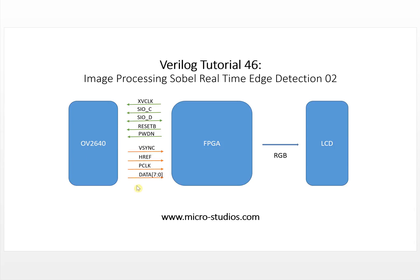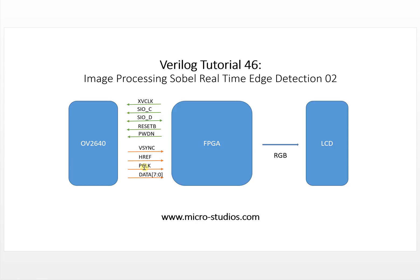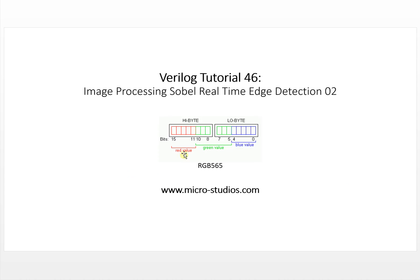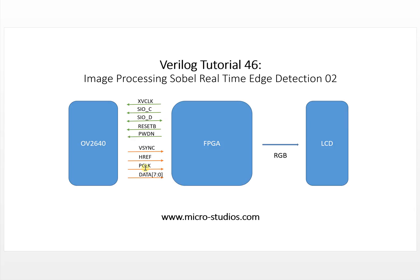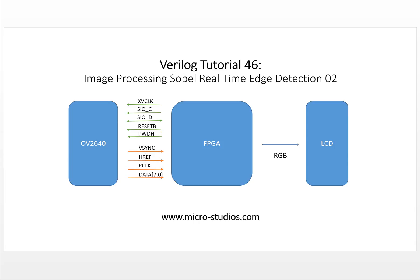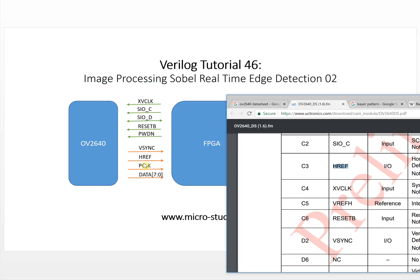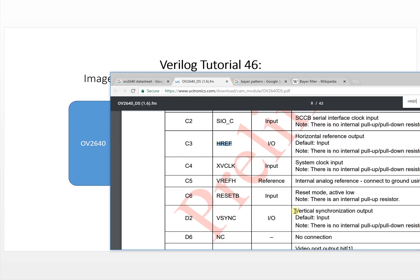The next part is particularly important for image processing. The most important thing is the pixel clock. The pixel clock tells you each clock outputs one pixel or half of a pixel. It is half a pixel because if you use the RGB 565 format, we need two bytes to represent one pixel color. This is the horizontal reference and this is the vertical synchronized output.